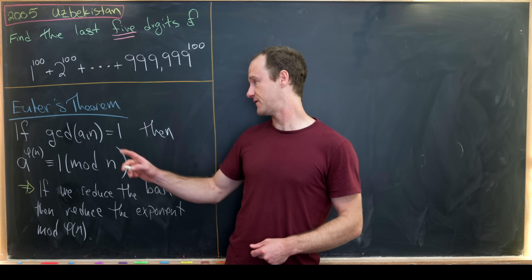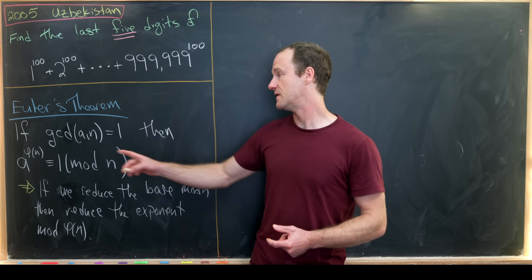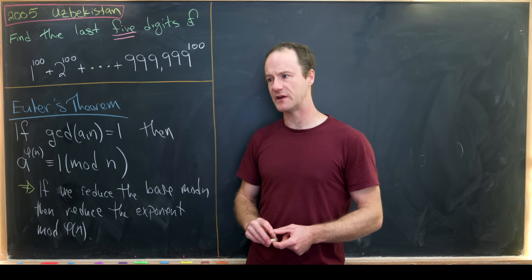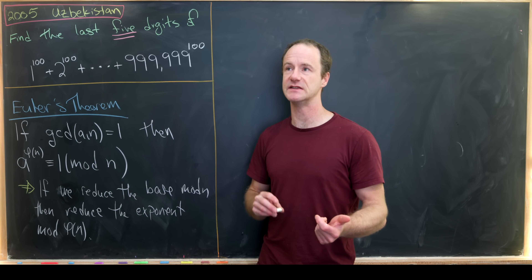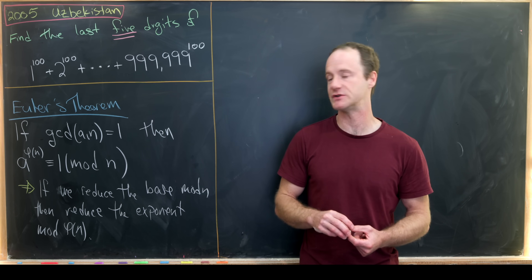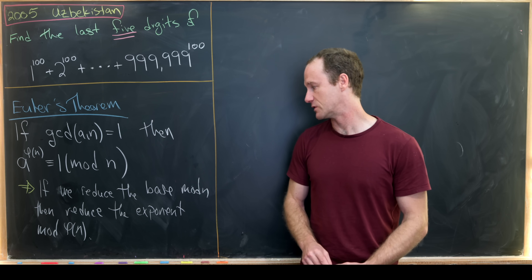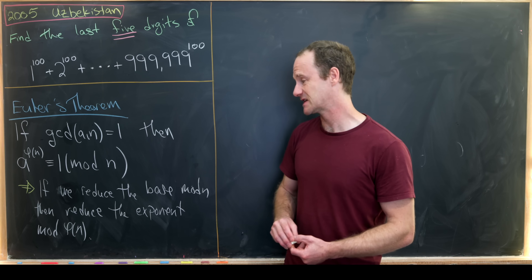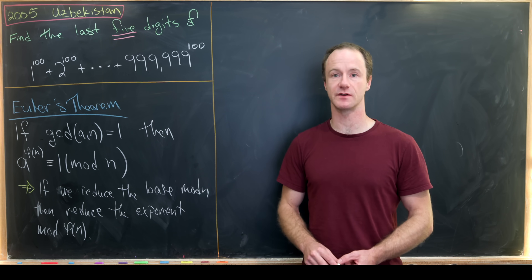Euler's theorem says that if two numbers are relatively prime — in other words, their GCD is one — then a^(φ(n)) ≡ 1 (mod n). Recall that φ is Euler's totient function, and φ(n) is exactly the count of numbers between 1 and n that are relatively prime to n. An immediate result is: if we reduce the base of a number modulo n, we can reduce its exponent modulo φ(n). That's how we'll use Euler's theorem here.